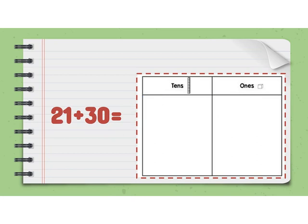Let's look at another one. 21 plus 30. 30 is a multiple of 10. It has 3 tens. 21, if we break that one apart we have 2 tens and 1 one.